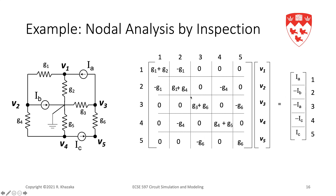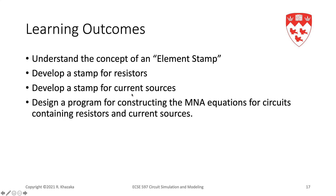You can verify that each row of the matrix corresponds to KCL at the corresponding node — for example, the first row including IA is KCL at node 1. In this video we introduced the concept of an element stamp, developed stamps for resistors and current sources, and you should now be able to write a computer program that takes a netlist and constructs the MNA equations for circuits containing resistors and current sources. This is exactly what you'll do on your first assignment.